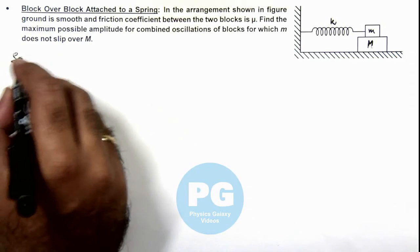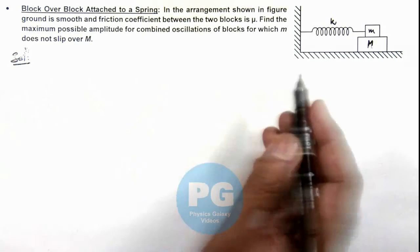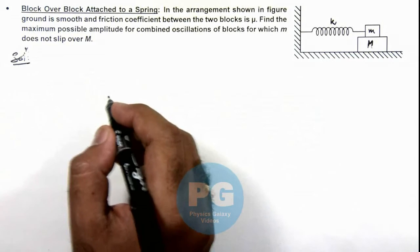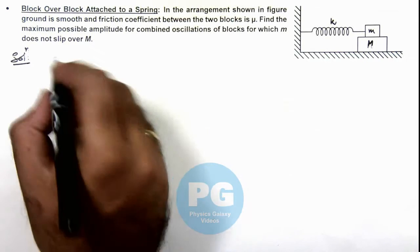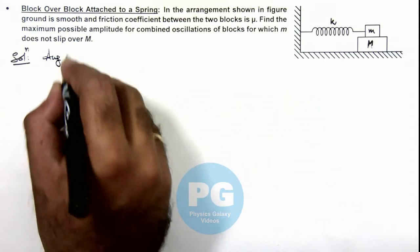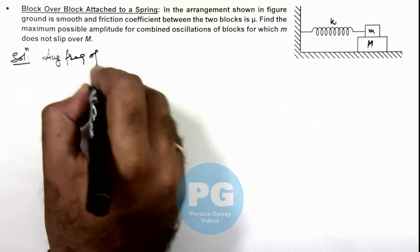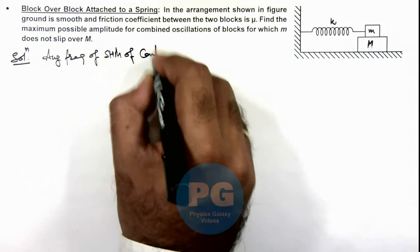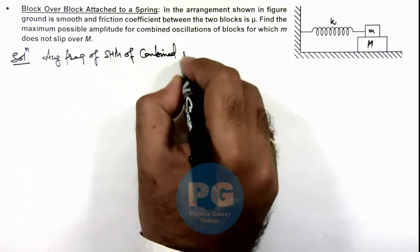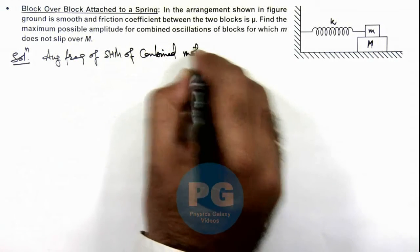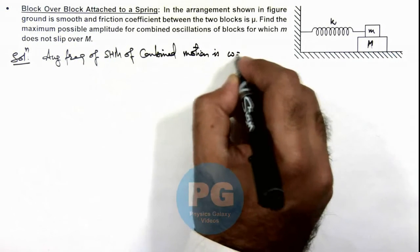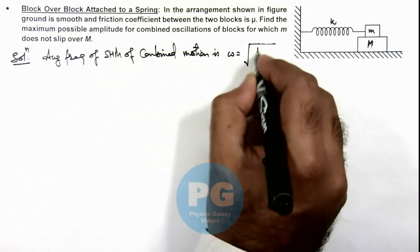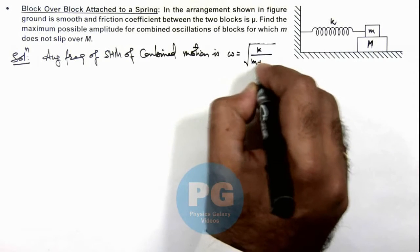In solution, we can directly write, as we have studied about spring block oscillations in concept videos, that the angular frequency of SHM of combined motion is omega equals root of k by m plus capital M.